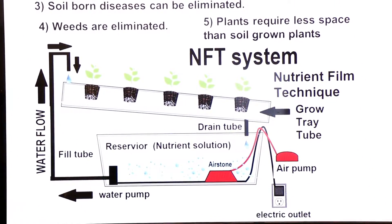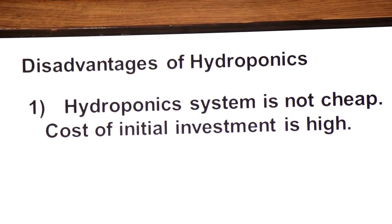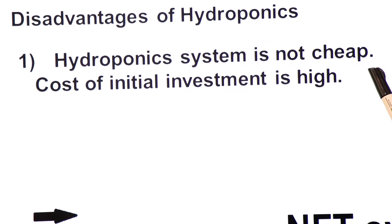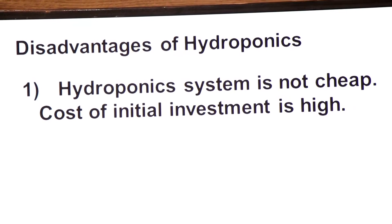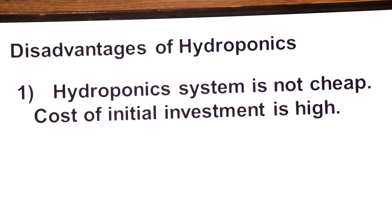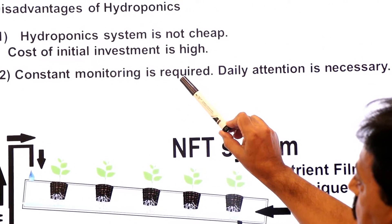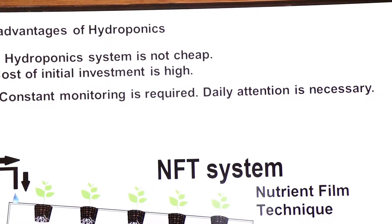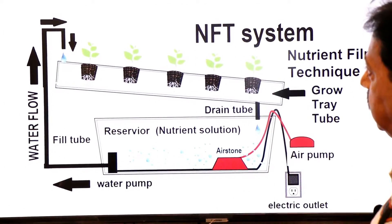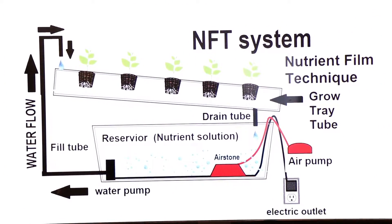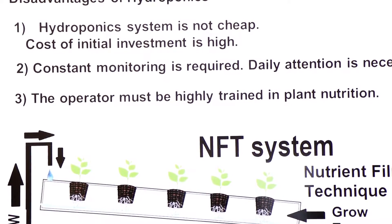Now let us look at the disadvantages of hydroponics. First — the hydroponics system is not cheap; it is expensive. The cost of initial investment is high. It is a costly method. Second — constant monitoring is required; daily attention is necessary. Care must be taken that nutrient supply is continuously provided, and only a well-trained operator can do this. The operator must be highly trained in plant nutrition.